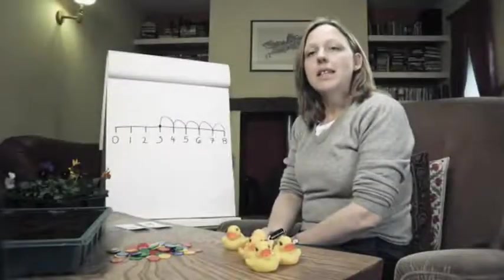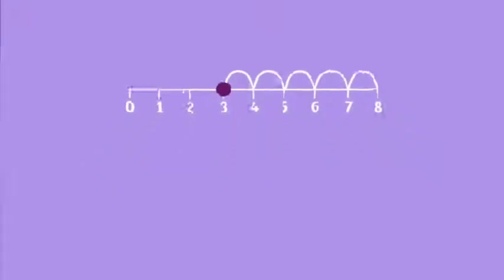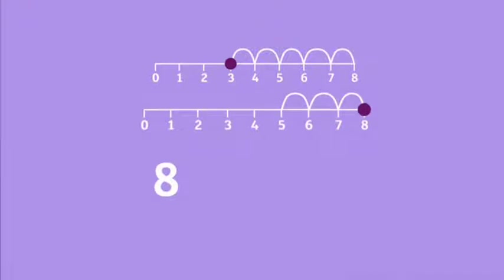Another method is to start from five and see how many numbers we need to count on to get to eight. One, two, three. So eight take away five is three.